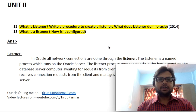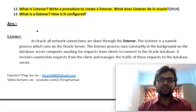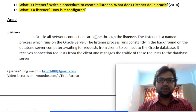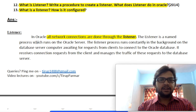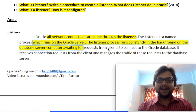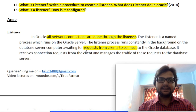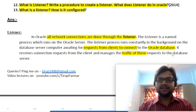Now it's easy for everyone to write these steps to configure a listener. Let's discuss it theoretically. First, the definition: all Oracle network connections are done through the listener — this is one of the most important points. The listener is a named process which runs on the Oracle server constantly in the background, awaiting requests which come from clients. It listens for client requests and helps those clients connect to the Oracle database. It receives connection requests from clients and manages the traffic to the database server.